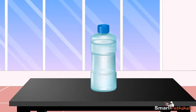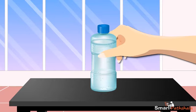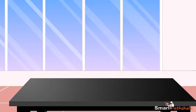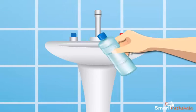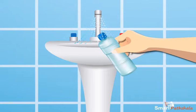Fill it with hot water, empty the bottle, and immediately cap it tightly. Handle the hot bottle carefully and put it in a wash basin. Pour fresh water over the bottle. We can notice that the shape of the bottle gets distorted.